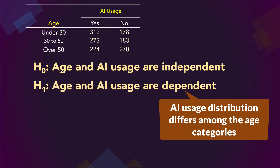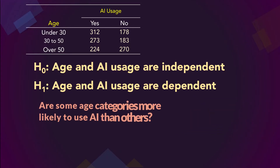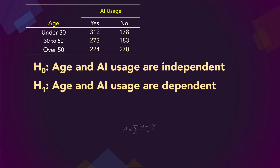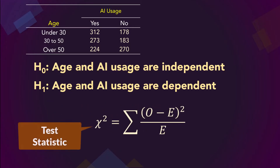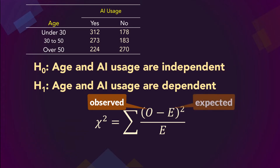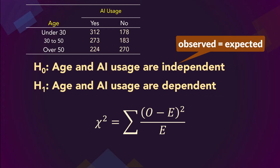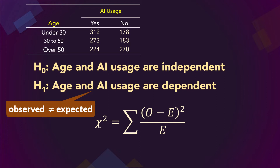In the null hypothesis, independence means that there is no difference in the distribution of AI usage among the age categories. In the alternative hypothesis, dependence or relationship implies that AI usage distribution will differ among the age categories. Specifically, the question here is: are some age categories likely to use AI more than others? The test statistic compares the observed frequencies with the expected frequencies. The null hypothesis basically says that the observed and expected frequencies for each cell are essentially equal, while the alternative states that they are different.